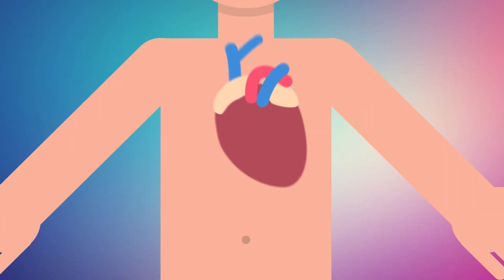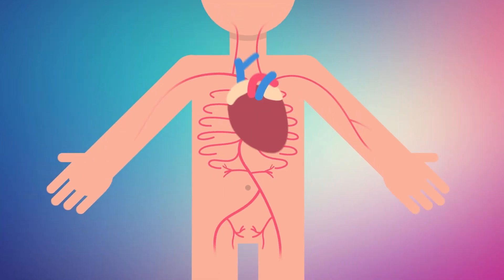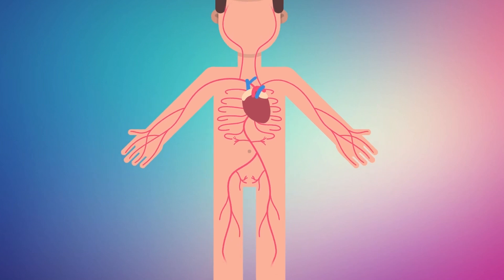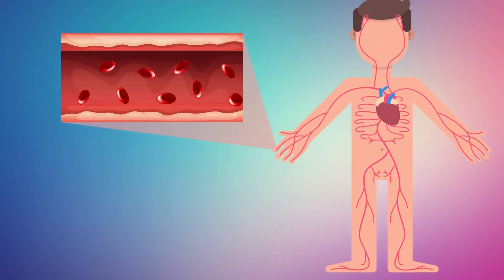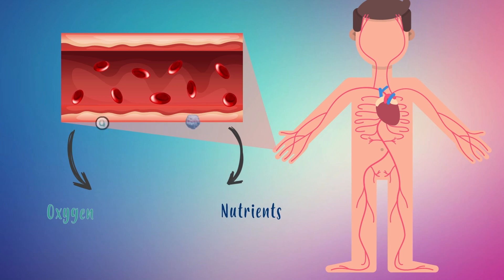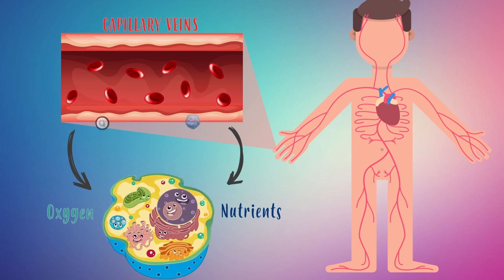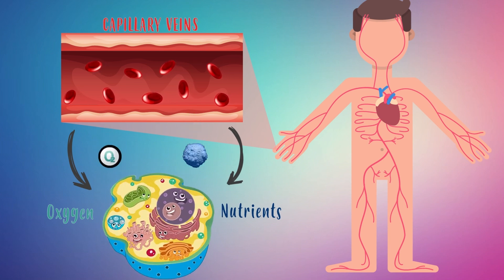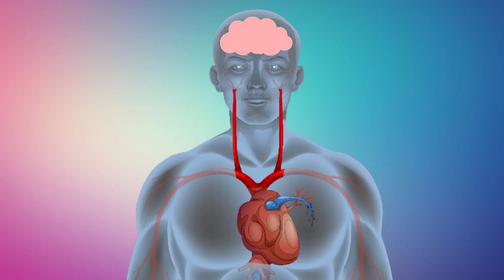From that moment, blood flows through our body through many veins. During this trip, the blood is delivering oxygen and nutrients to the cells through the capillaries. It reaches the neck, head and brain through one side.